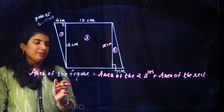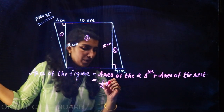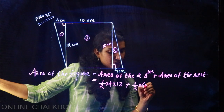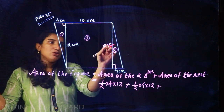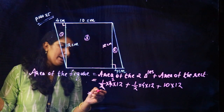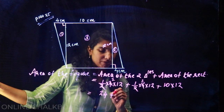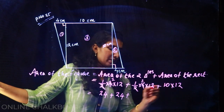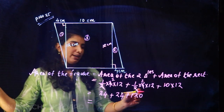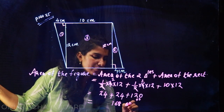This is the area of the figure, that is equal to area of the two triangles: 1/2 into 4 into 12, plus 1/2 into 4 into 12, plus area of the rectangle, that is length into breadth: 10 into 12. So 2 into 12 is 24, plus 12 into 10 is 120. Equal to 24 plus 24 is 48, plus 120 equals 168 square units.